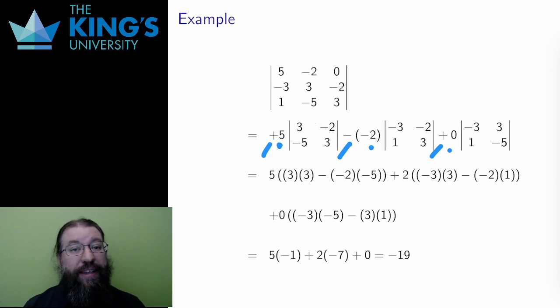For the negative 2, I again delete the row and the column that contained that negative 2, and see what is left over. The result is a 2x2 matrix with negative 3, negative 2, 1, and 3. And finally, for the 0, I delete its row and column and write down the 4 entries which are left.